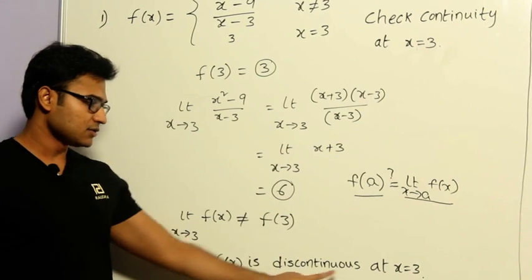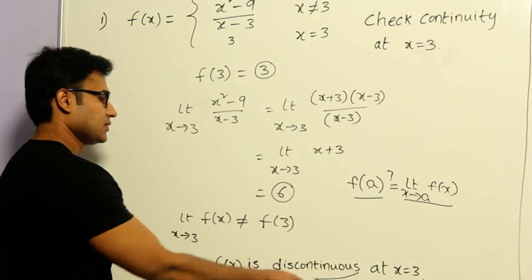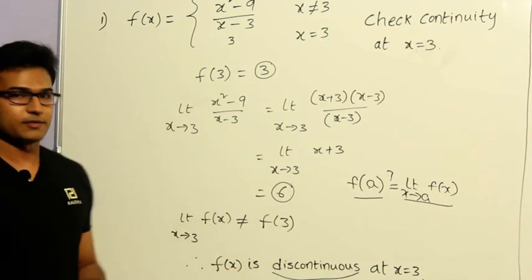This function is not continuous at x equals 3. So this function is discontinuous at x equals 3, which means it is not continuous. So discontinuous means it is not continuous at x equals 3.